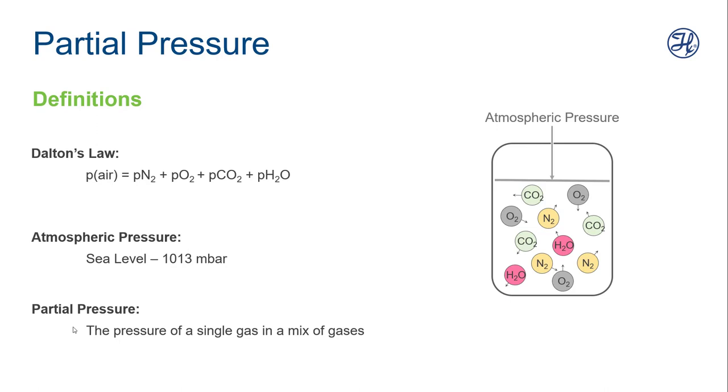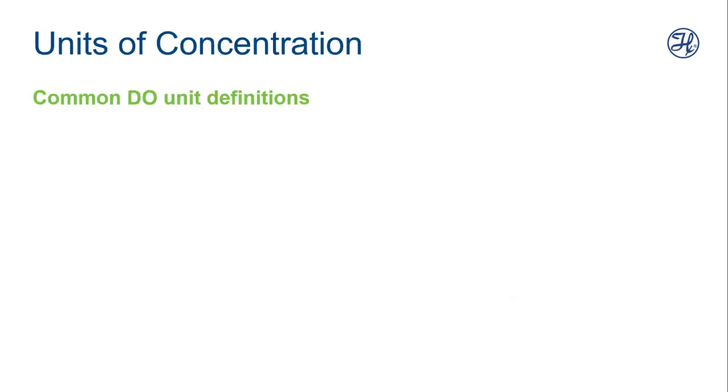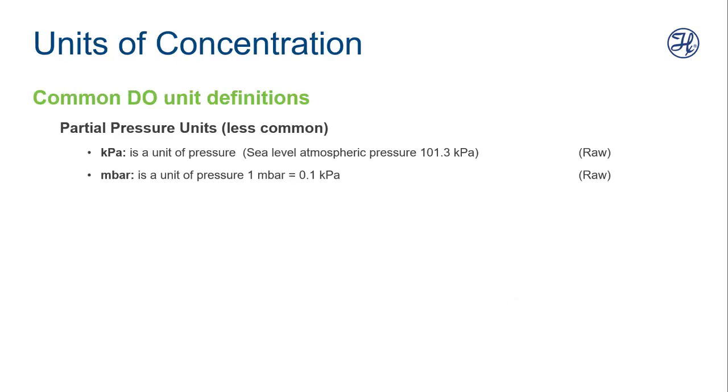Let's take a look at some actual units of measure that you might be more familiar with. There are actual partial pressure units, and these are, as we would expect, pressure units. So kilopascals or millibars. And we can actually express these measurements as raw values of partial pressure. That's actually what we're measuring when we measure with an oxygen sensor or CO2 sensor.